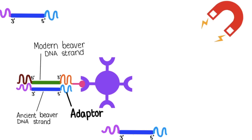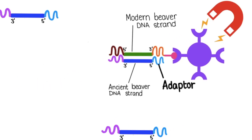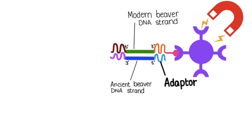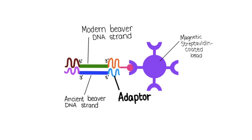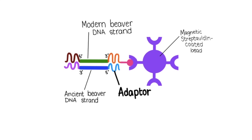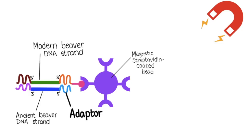By placing the tubes in a magnetic tray, the baits, still hybridized with our ancient DNA, were pulled over to the walls of the tube. Using a standard pipette, we removed any DNA that didn't hybridize. Later we used a magnet to separate the baits from our captured ancient DNA.